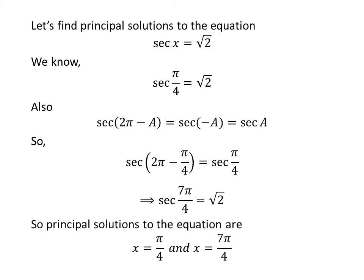So the principal solutions to the equation secant of x is equal to square root of 2 are π/4 and 7π/4.